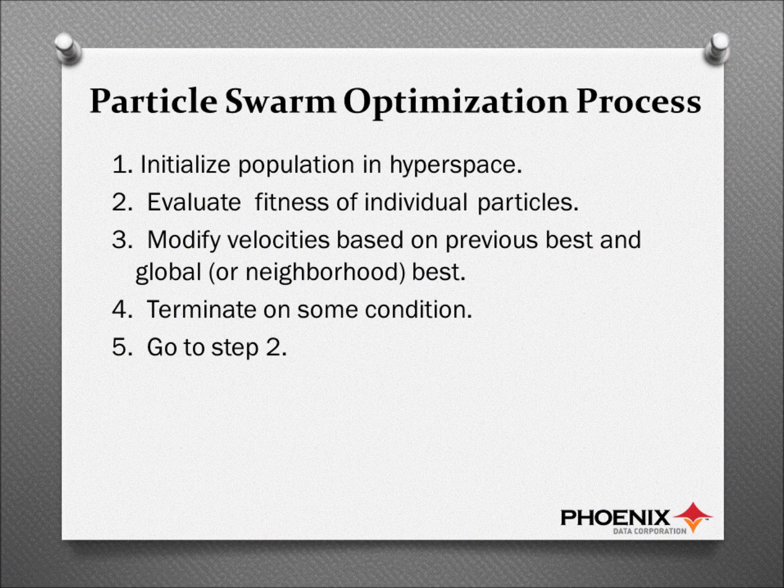Here's the process: we initialize the population including values and velocities, we evaluate the fitnesses, then we modify the velocities based on previous best and global or neighborhood best, and we loop around, terminating if we get a good enough solution or we run out of time.